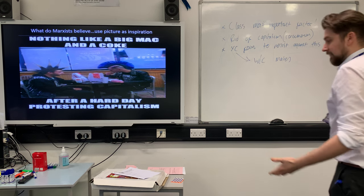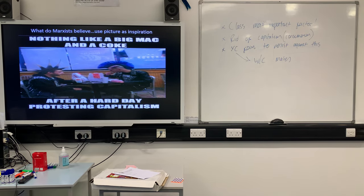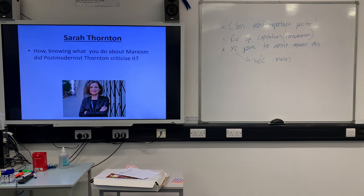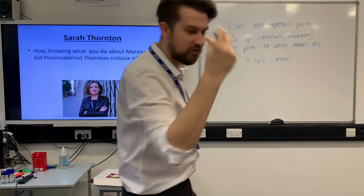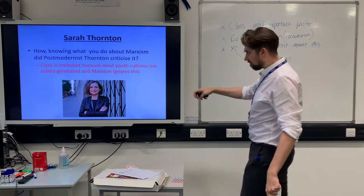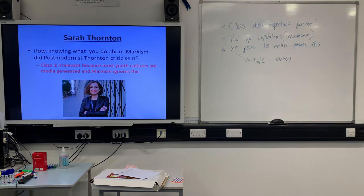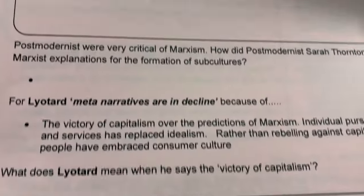Postmodernists will be very critical of marxism. Sarah Thornton — who we're going to look at later — is going to say that class is irrelevant because most youth cultures are media-generated, and marxism ignores this very important aspect of youth culture. You can tell postmodernism is a newer social theory because she's not only a woman but she appears in a colour photograph, which is good for sociology.